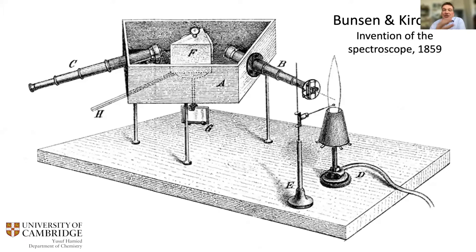Bunsen and Kirchhoff begin their papers: 'It is well known that certain substances possess the property of imparting definite colors to the flames in which they are heated.' They noticed that passing this light through a prism gave a series of colored bands — an emission spectrum.